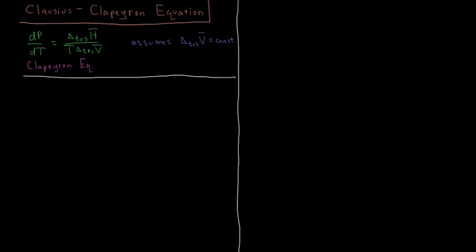In this video we're going to look at a modification to the Clapeyron equation from the previous video, to account for the fact that the molar volume of gases can change a lot as a function of temperature and pressure. The result will be the Clausius-Clapeyron equation.